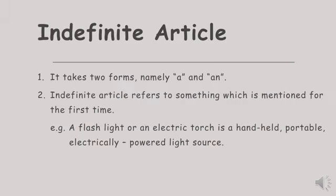Let's begin by discussing indefinite article. Indefinite article takes two forms, namely a and an. Indefinite article, ataupun kata sandang yang tidak tentu, itu ada dua, yaitu a dan an. Its function: indefinite article refers to something which is mentioned for the first time — belum pernah disebutkan sebelumnya. For example: A flashlight or an electric torch is a handheld, portable, electrically powered light source. Flashlight dan electric torch di sini disebutkan untuk pertama kali, menggunakan kata sandang tidak tentu a dan an.